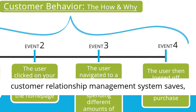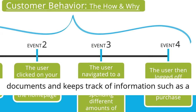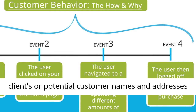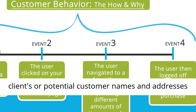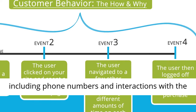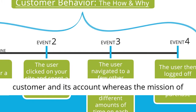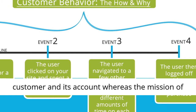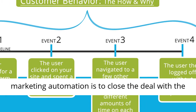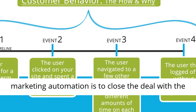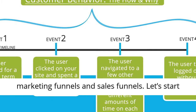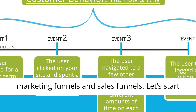A customer relationship management system saves, documents, and keeps track of information such as a client's or potential customer's names and addresses, including phone numbers and interactions with the customer in its account. Whereas the mission of marketing automation is to close the deal with the client by various means such as deploying marketing funnels and sales funnels.